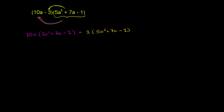And then we can simplify it. 10a times 5a squared: 10 times 5 is 50, and a times a squared is a to the third. Then 10 times 7 is 70, and a times a is a squared. 10a times negative 1 is negative 10a.